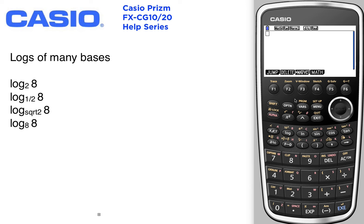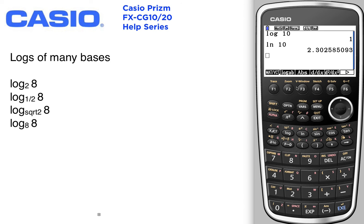Logs of many bases — we've got log base 10, we've got log base e (the natural log). We can also do logs at different bases. One place to find it is under the math menu, where we get the log template.